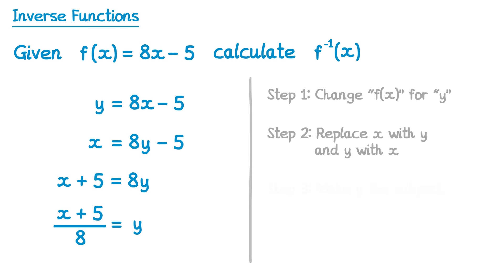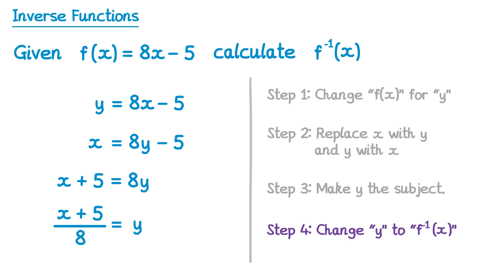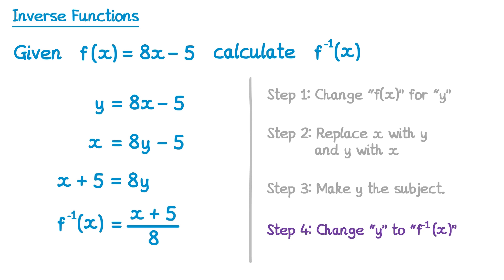The final step — step 4 — is to change the y into inverse f(x). We remove y and replace it with f⁻¹(x), and normally we write the function on the left hand side, so we switch those two parts around. The inverse function is (x + 5) ÷ 8.